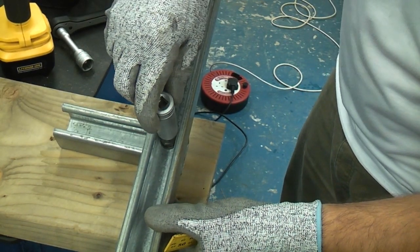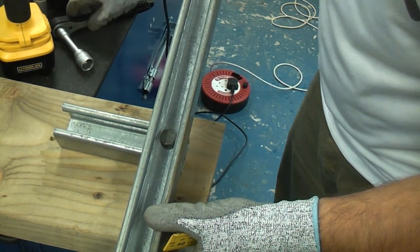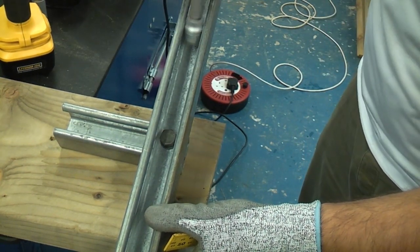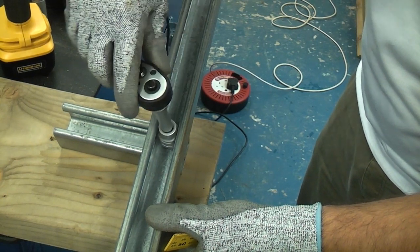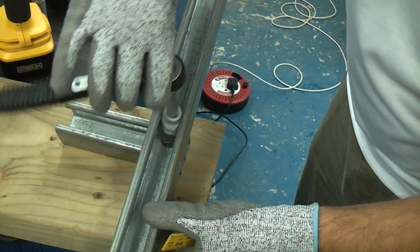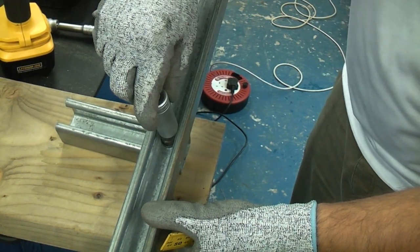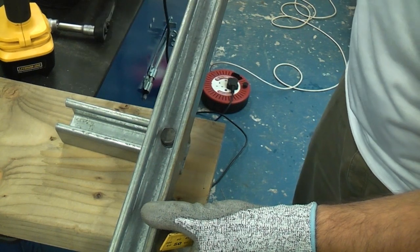One thing I'd like to point out is that you can't put a regular socket through the channel on unistrut. If you can get in from the side you can use a regular socket and you can get that on there with an extension bar and tighten it. You cannot use a regular socket as it won't go in, although you can buy a special one if needed.